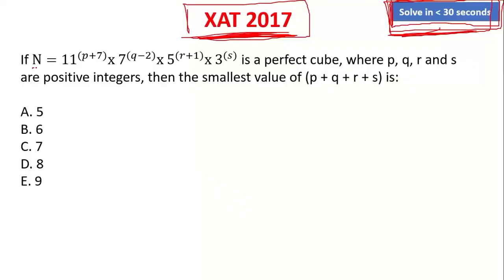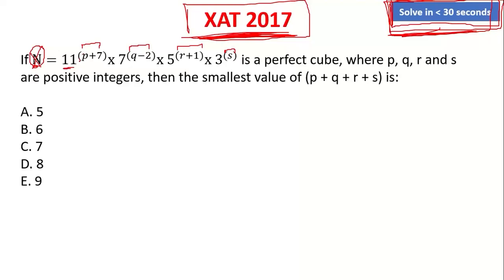This is saying: if n is a number, there is no number equal to 11 raised to the power of something, multiplied by 7 raised to the power of something, multiplied by 5 raised to the power of something, multiplied by 3 raised to the power of something. We have seen this equation. Some people will be surprised looking at it — there is something weird about it. We have studied variable-based expressions, so we have seen a variable in the power.